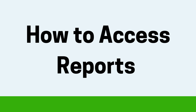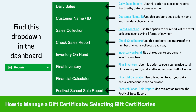To access any reports, use the option labeled Reports in the Bookworm dashboard. This will allow you to access the following options: Daily Sales, Customer Name/ID, Sales Collection, Check Sales Report, Inventory on Hand, Final Inventory, Financial Calculator, and Festival School Sale Report.